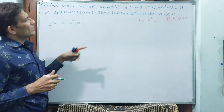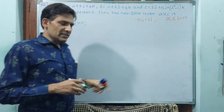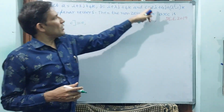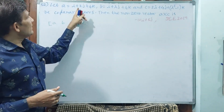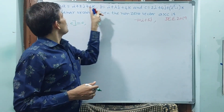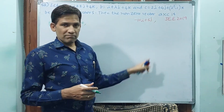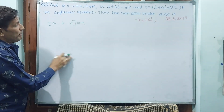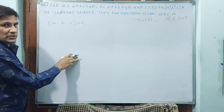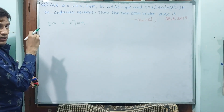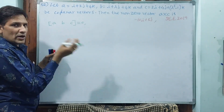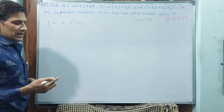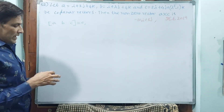What are they asking? A non-zero vector of A cross C. The logic is: A cross C will come out in terms of lambda. That lambda value you are going to find from the coplanarity condition. Maybe more than one value will come. Among those two or three values, we need to find which value makes A cross C non-zero.